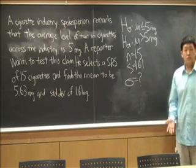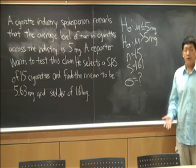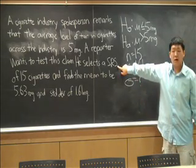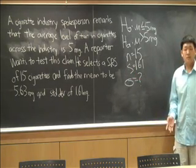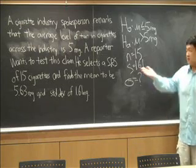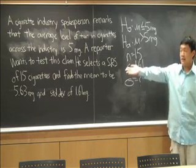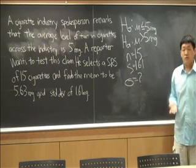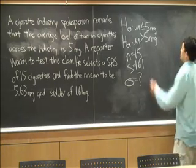The first thing we need to do is to talk about the conditions that we need to use a t-test. First, we know that we have a random sample because it's given in the problem. The second condition is that the data is normally distributed. Unfortunately, this problem doesn't tell us anything about the distribution of the data from those 15 cigarettes. So to continue with this problem this way, we'll have to assume that. Let's write that assumption down.